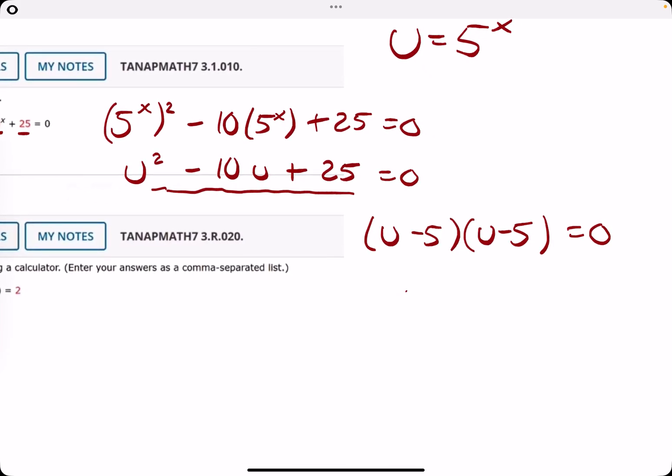So when we solve for u, negative 5 times negative 5 is 25, negative 5 plus negative 5 is negative 10. So then we have u minus 5 equals 0, so u is equal to 5.